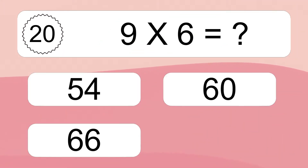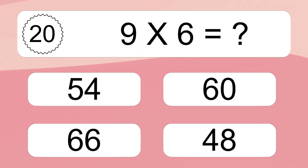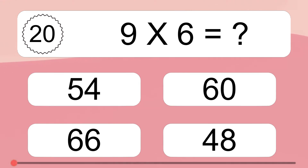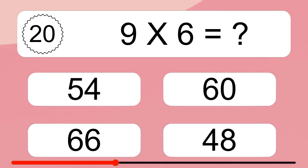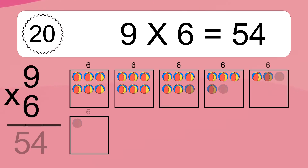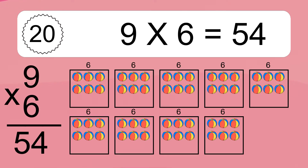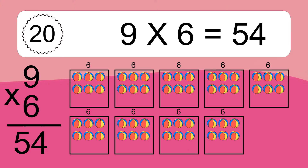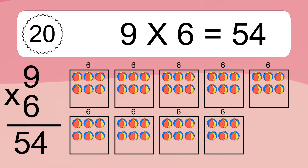Nine times six equals what? Nine times six equals fifty-four. We have nine boxes, and each box has six colorful balls inside. If you count all the balls in all the boxes together, you will have nine times six balls. This equals fifty-four balls.